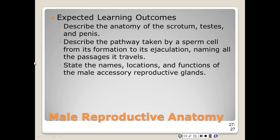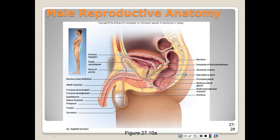For the male reproductive anatomy: the scrotum and the penis constitute the external genitalia of the male and they occupy the perineum — a diamond-shaped area behind the thighs, bordered by the pubic symphysis, ischial tuberosities, and the coccyx.